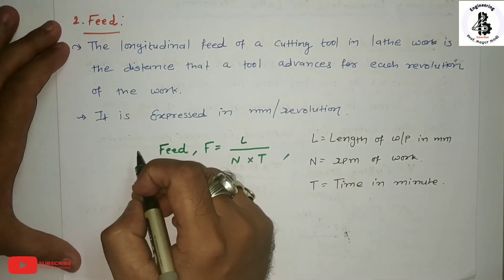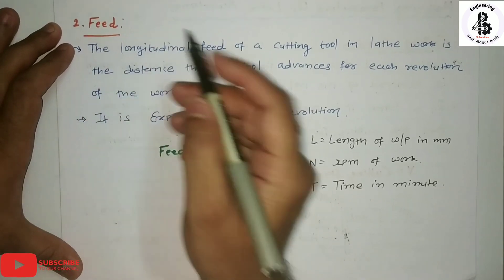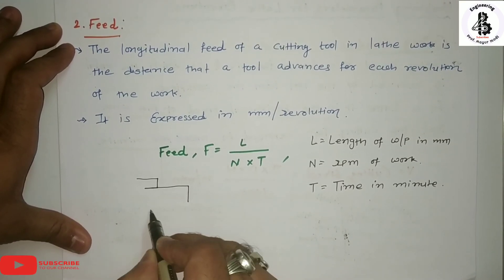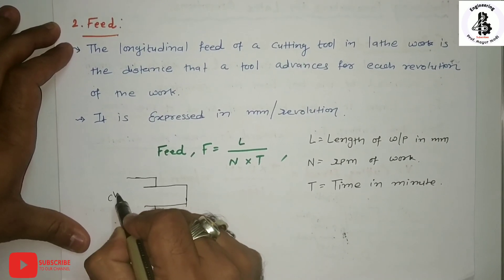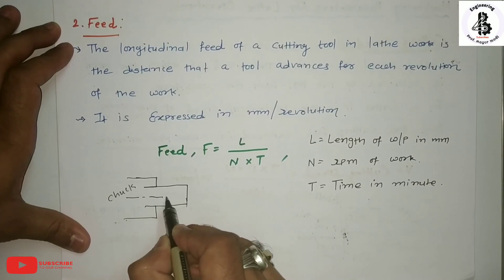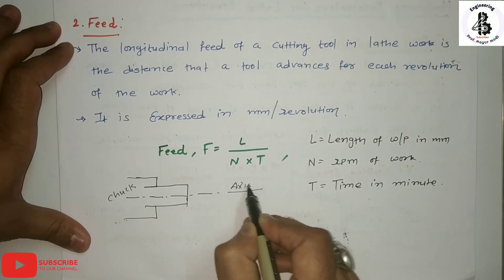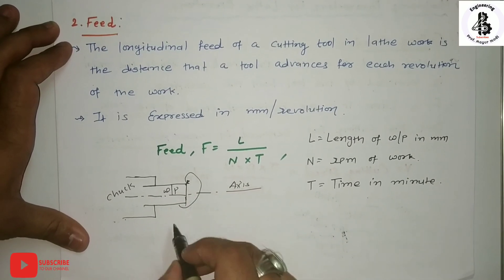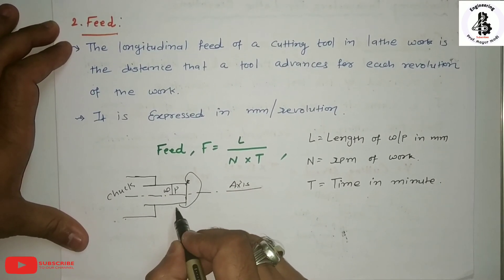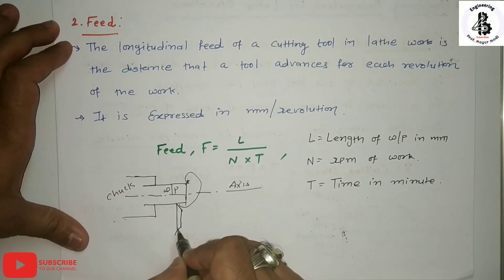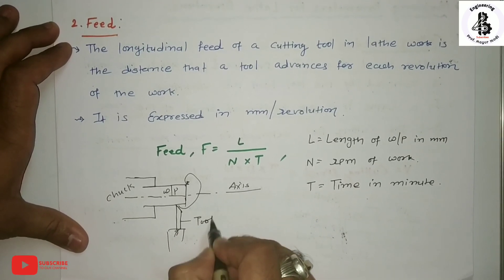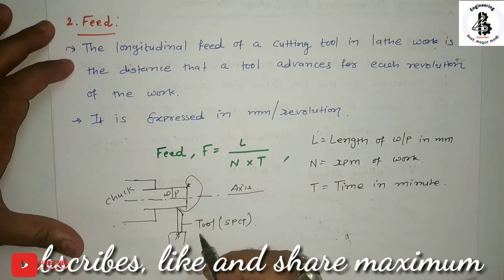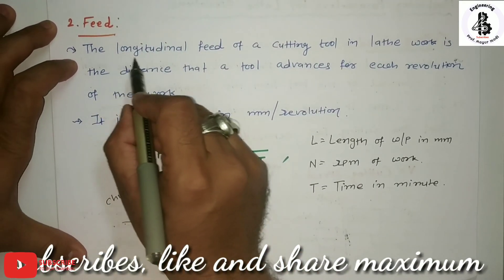The second important parameter for lathe operations is feed. Looking at the arrangement of the workpiece and tool: the workpiece material is fitted into the chuck, that is the axis of rotation. The workpiece is rotated, and for different tool positions relative to the workpiece there are basically two types — orthogonal and oblique. The tool used is a single point cutting tool, or SPCT. The longitudinal feed of the cutting tool in lathe work is the distance that the tool advances for each revolution of the workpiece.